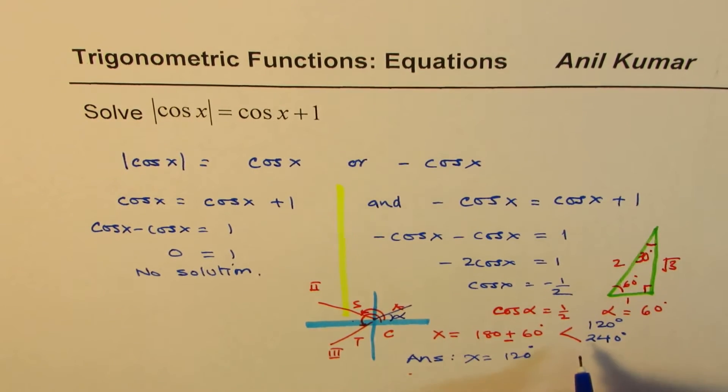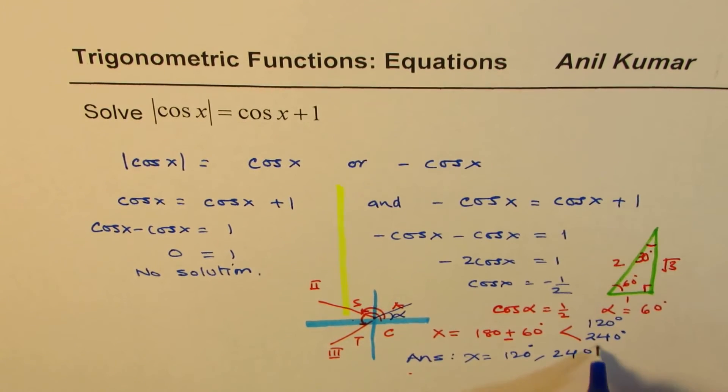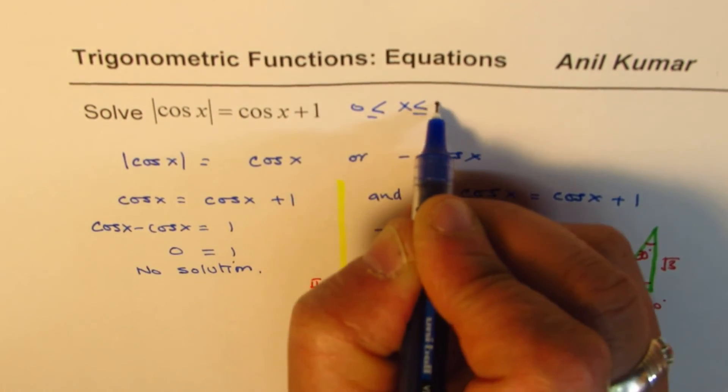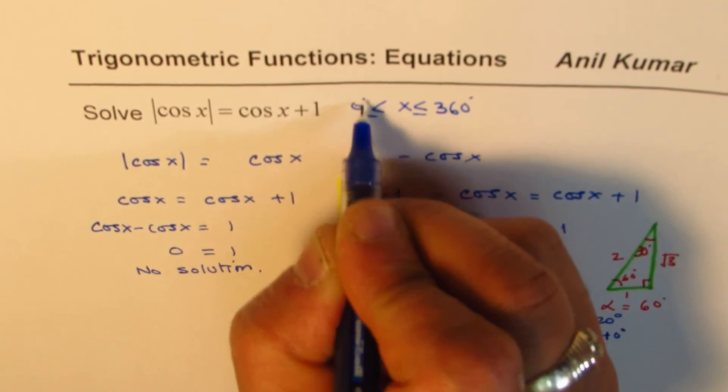So let us say we have x between 0 to 360 degrees. Let me just add that condition. If there is a general solution required, we could also write this as a general solution.